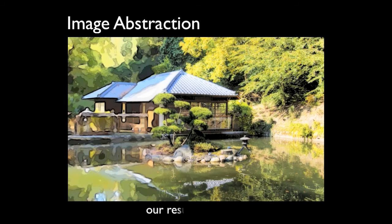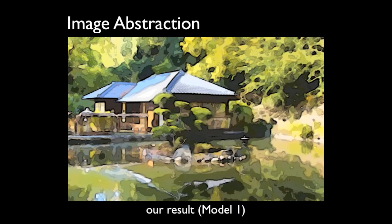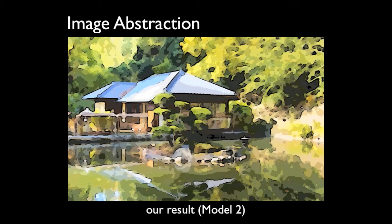Many computational photography applications can benefit from well-operated structure extraction from texture. In the following, we will demonstrate a couple of such applications which will further highlight the effectiveness of our approach. Here, we present some image abstraction results. We first simplify the image content using our models without degrading the structures beneath them, and then use these simplified versions to generate non-realistic, more expressive looks.